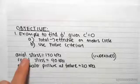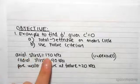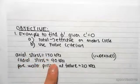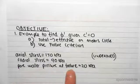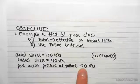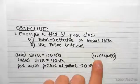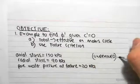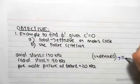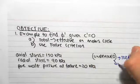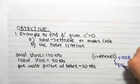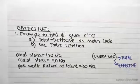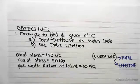In our example, the axial stress is 150 kPa, the radial stress is given as 90 kPa, and the pore water pressure at failure equals 20 kPa. This is an undrained case. For an undrained case, we can do either total stress analysis or effective stress analysis, and effective stress is much easier — we always use effective stress.